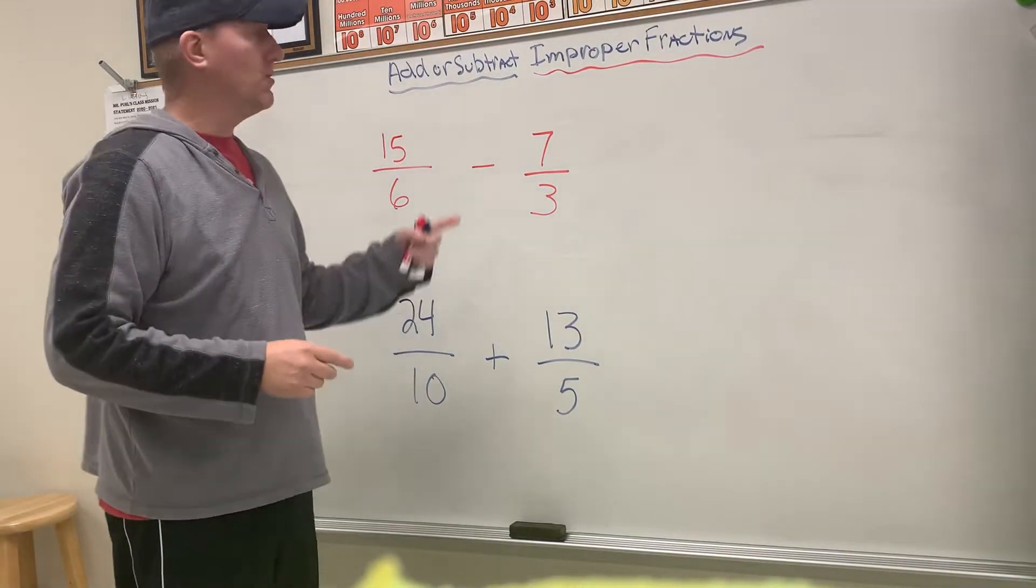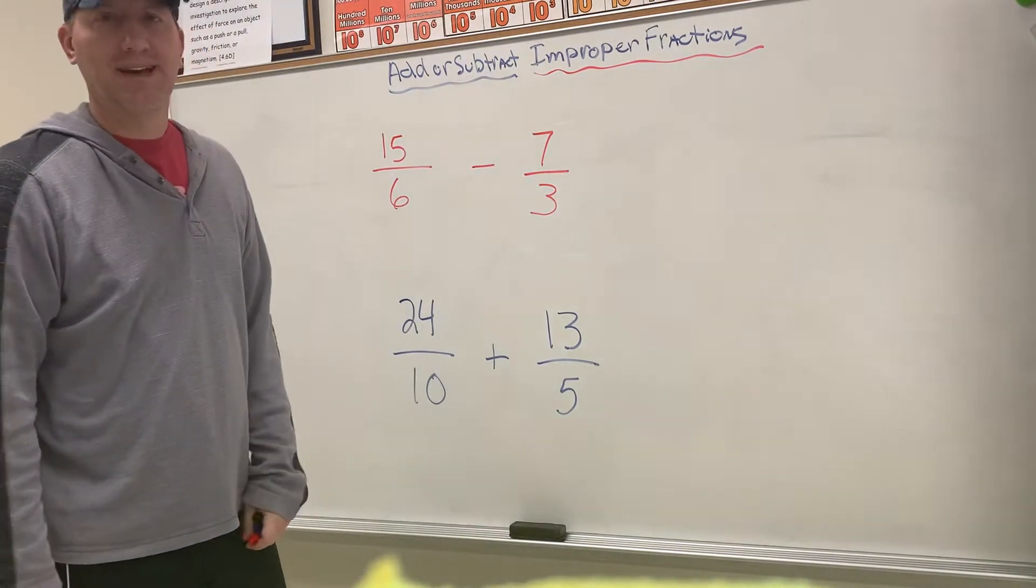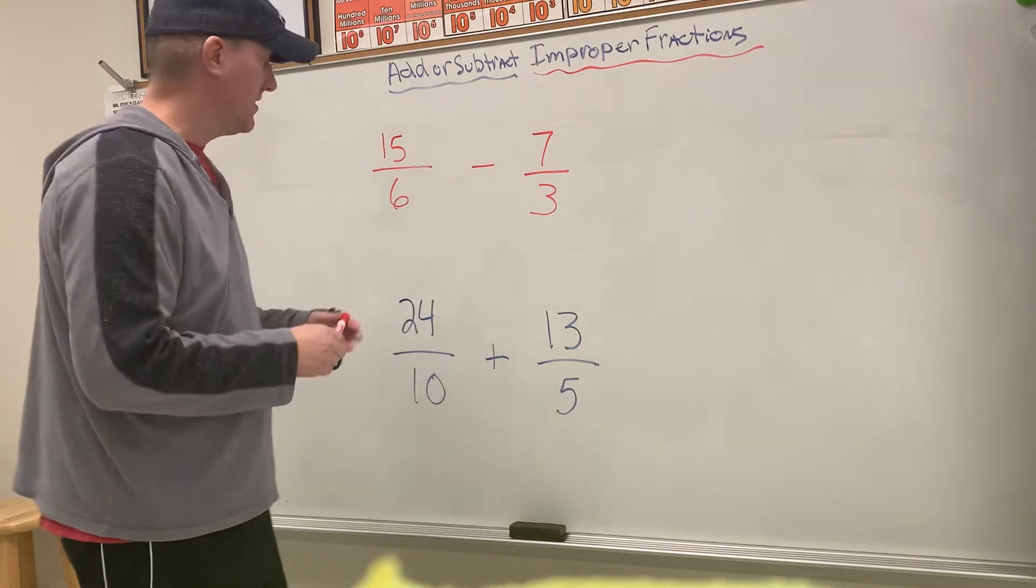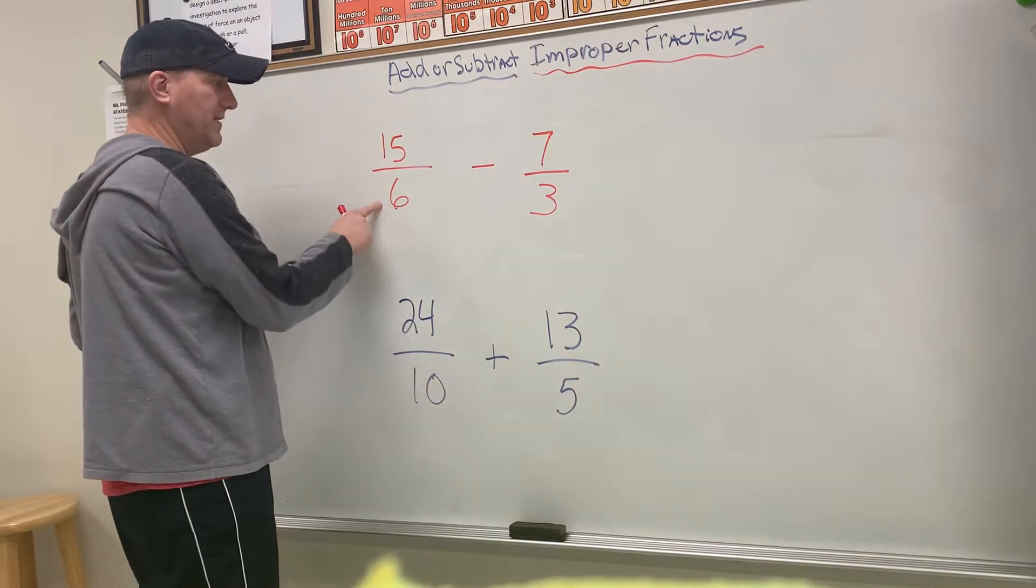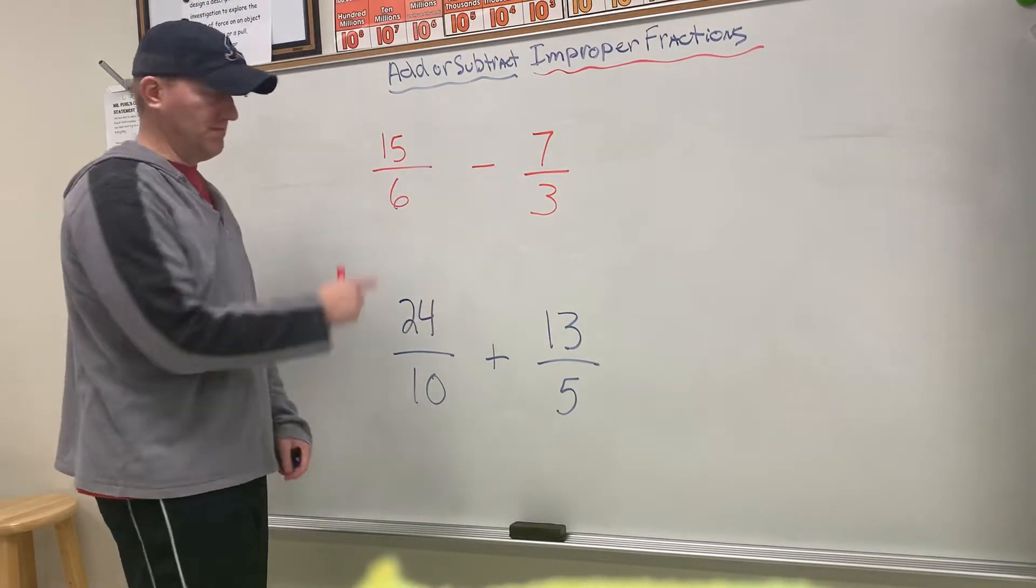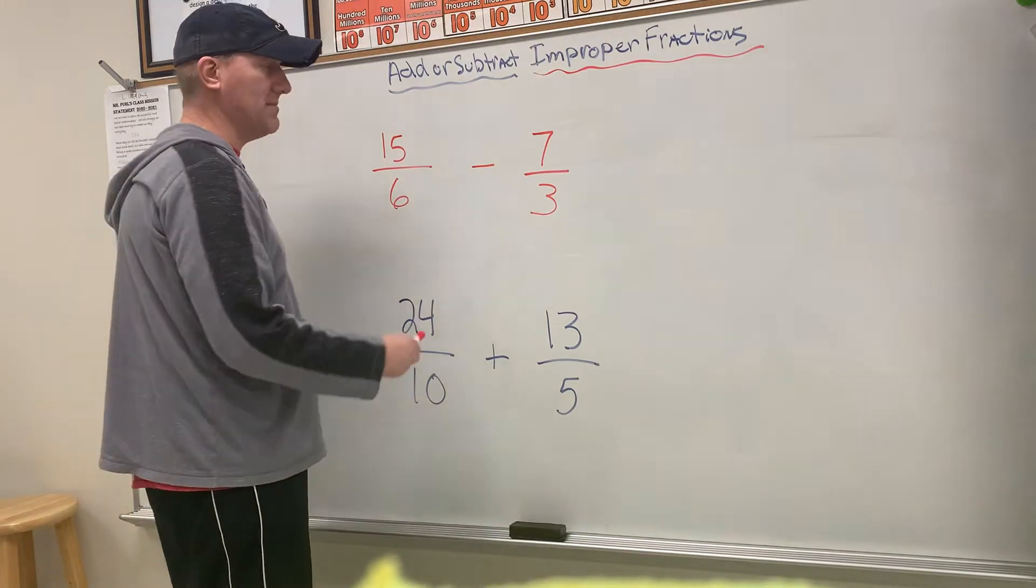Today we're going to add or subtract improper fractions. The key is having a common denominator. If you have 15/6 and you're subtracting 7/3, you can't just subtract it. You have to find a common denominator.